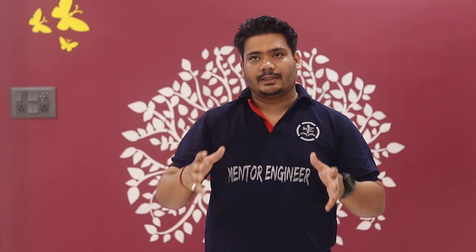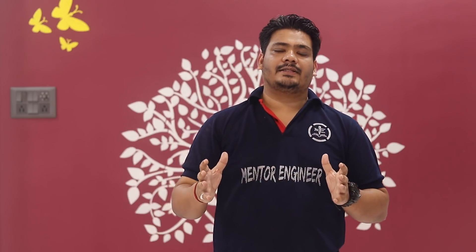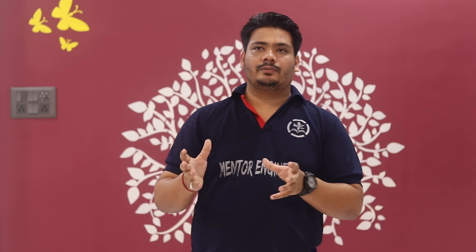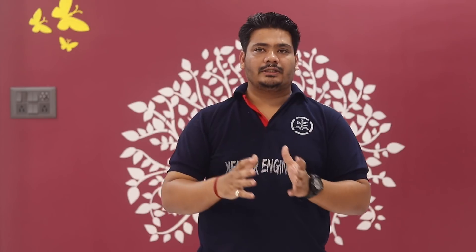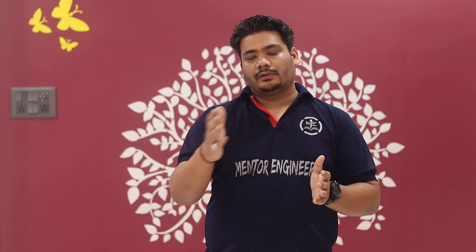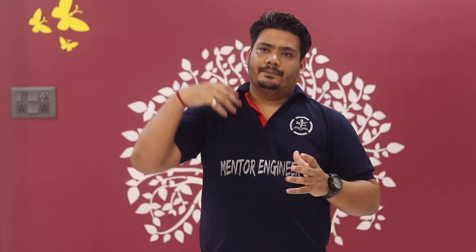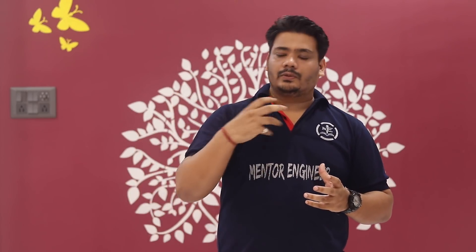If we talk about the MCC Round 1 seat allotment, the cutoff this time is going to be 570 plus for the unreserved category or OBC. If we talk about SC category then it will be 450 to 460, and for ST category it will be 430 to 440.